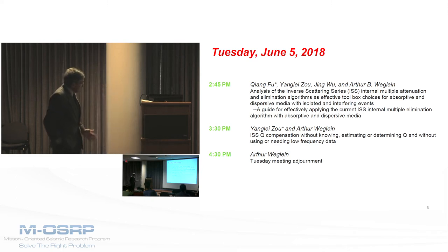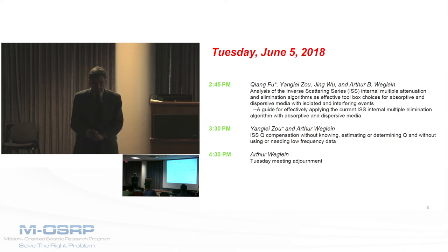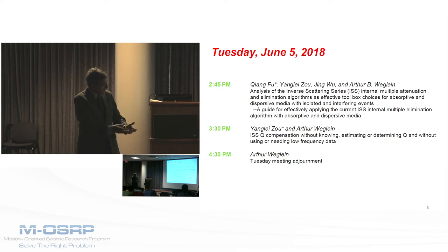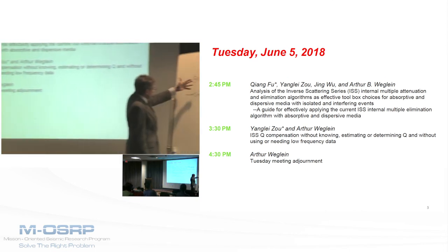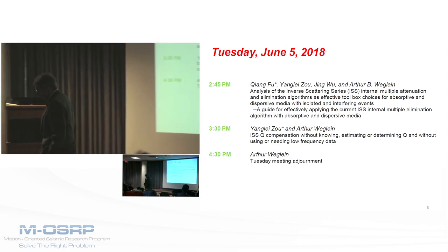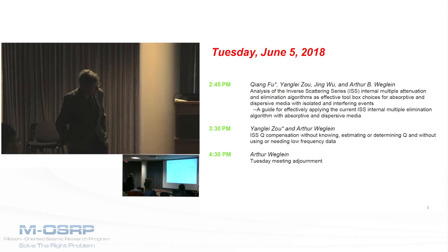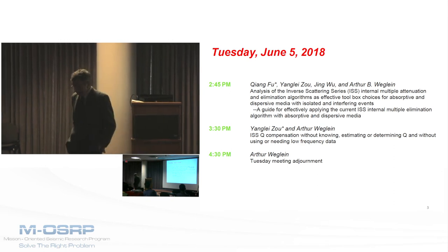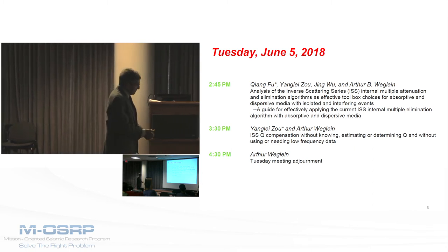That ended yesterday's meeting. Today we're in the business of primaries. We made comments about different migration methods — we wanted a migration tool that could bring an experiment through a medium where waves are one-way propagating. To deal with the role of primaries and multiples in migration, you need a migration algorithm that can handle non-one-way propagation. That's why we needed to define why multiples are an issue today, and under what circumstance they would not be.